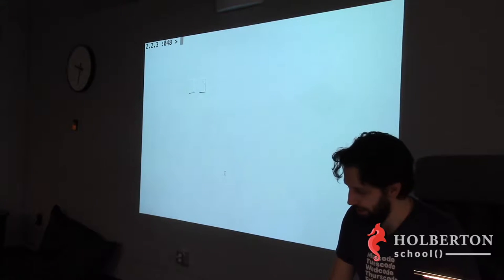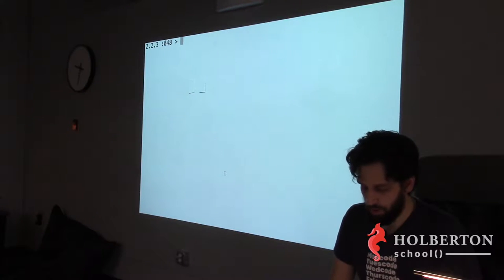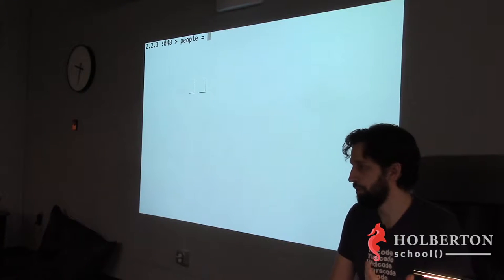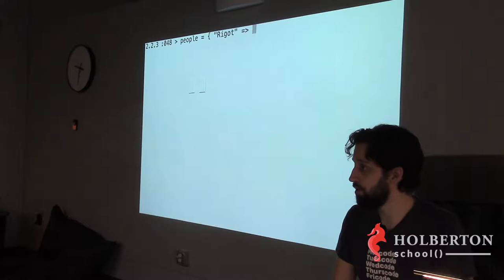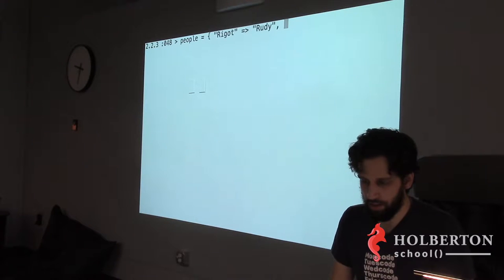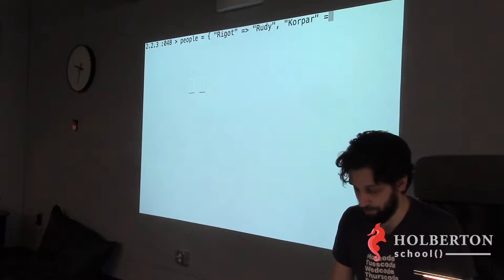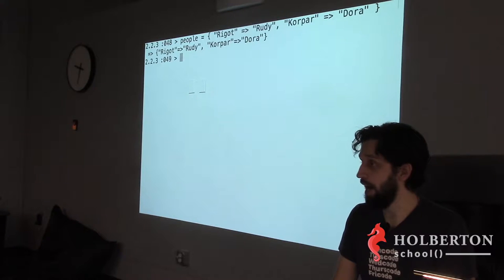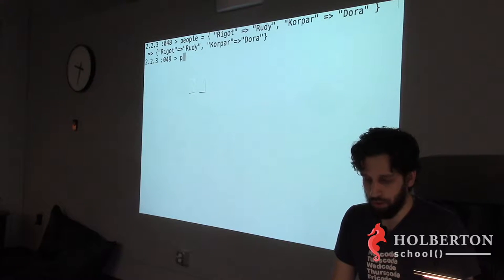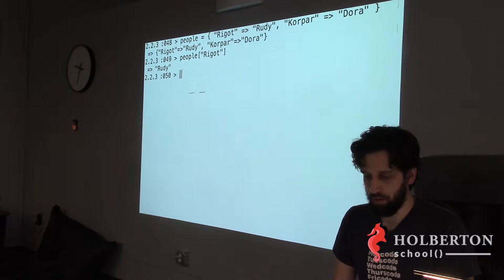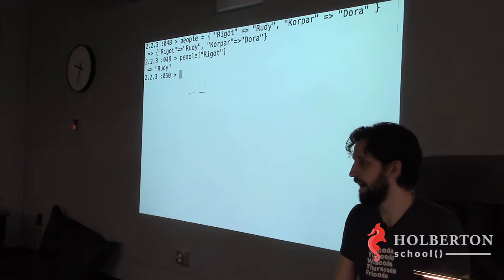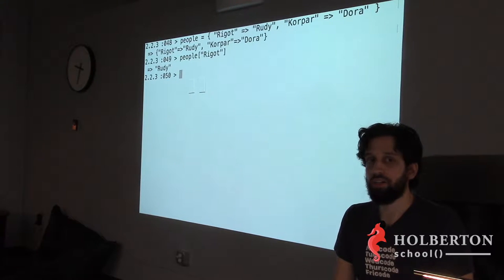For example: `people = { 'Rego' => 'some_value', 'Dora' => 'some_value' }`. The `=>` character associates a key to a value. Now I can do `people['Rego']` to get the value at the key 'Rego'. The hash associates each key to a value and you retrieve values by key.